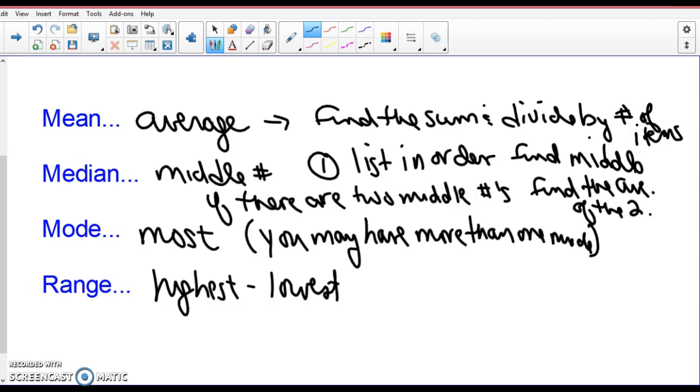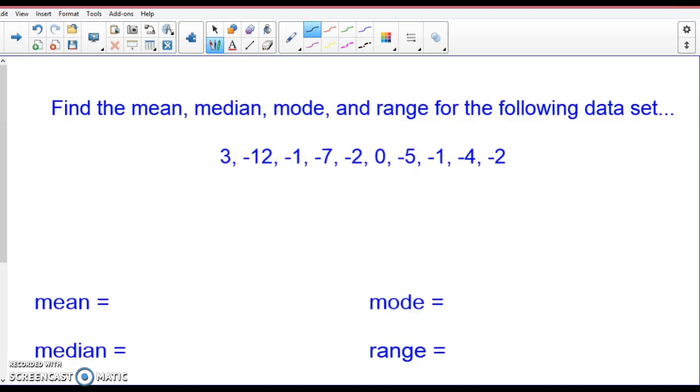These are all what we call measures of central tendency. Now, if I'm finding the mode and range for this set of data, I am going to list it in order first. So the smallest number is negative 12, then I have negative 7, negative 5, negative 4. I've got negative 2 twice. Notice I listed it twice. And then I've got negative 1, and then I've got zero, and then I've got 2.